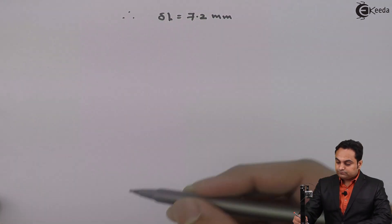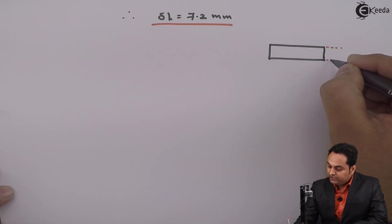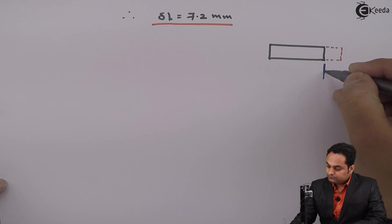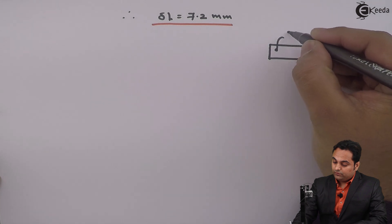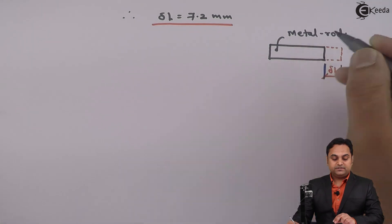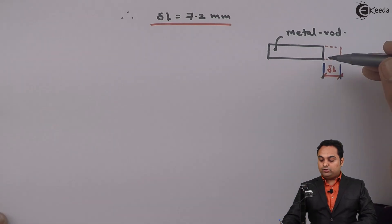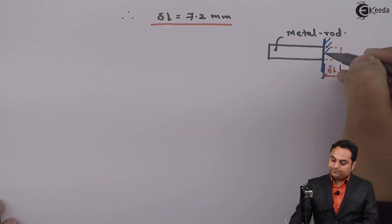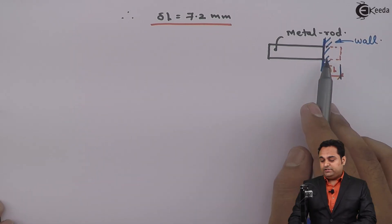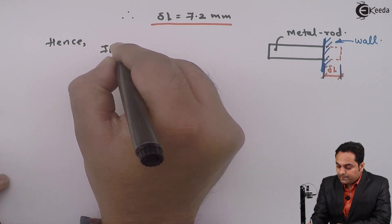The free expansion comes out to be 7.2 mm. Drawing the diagram: the metal rod would freely expand by delta L equal to 7.2 mm. Since the problem states that the free expansion is prevented, it means we are not allowing this metal rod to expand by 7.2 mm. A wall here stops the rod from expanding by delta L.